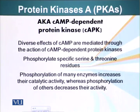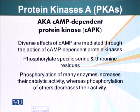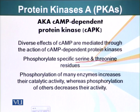In some cells, cyclic AMP can activate an enzyme called protein kinase A, also called cyclic AMP-dependent protein kinase, or CAPK or PKA — one and the same thing. The diverse effects of cyclic AMP are mediated through cyclic AMP-dependent protein kinase. This is a kinase which can attach phosphate groups to specific serine and threonine residues in a protein. Phosphorylation of many enzymes increases their catalytic activity, whereas phosphorylation of other enzymes inhibits their activity. We'll see examples of both these scenarios.